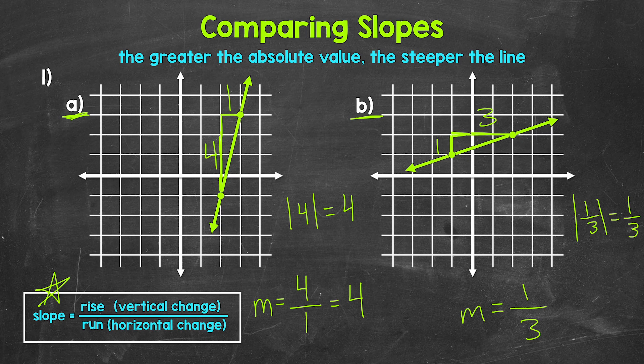Just to recap before moving on to number two: when comparing and understanding slopes, the greater the absolute value — the further from zero the slope is — the steeper the line. The closer to zero a slope is, the less steep it's going to be. Remember, a slope of zero is a horizontal line, a flat line. So the closer to that slope of zero we are, the less and less steep a line is going to be.